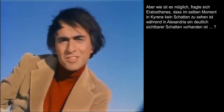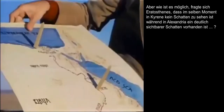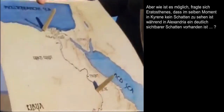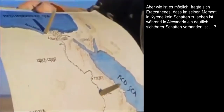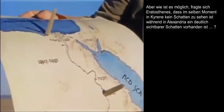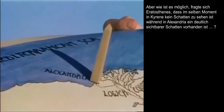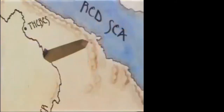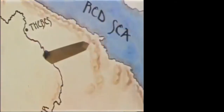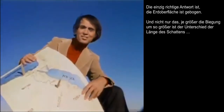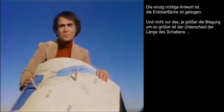But how could it be, Eratosthenes asked, that at the same instant there was no shadow at Syene and a very substantial shadow at Alexandria? The only answer was that the surface of the Earth is curved.